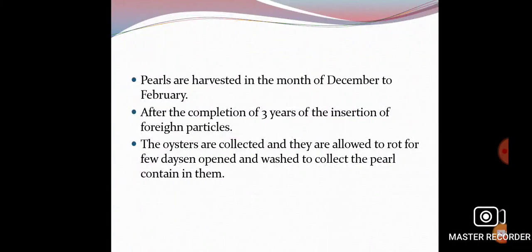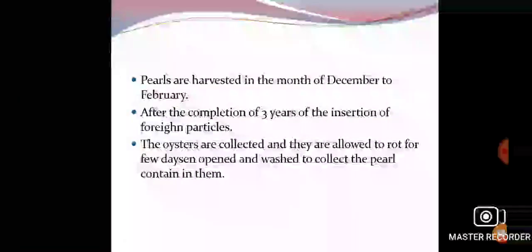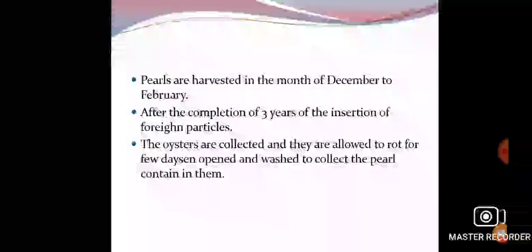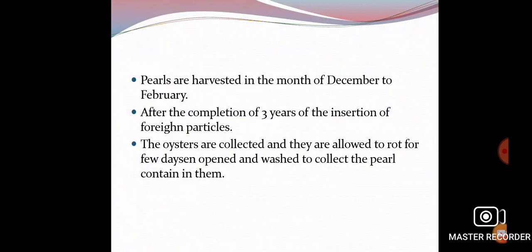The oyster requires three years for the complete formation of the natural pearl. The oysters are collected and they are allowed to rot for a few days, and then they are opened, washed, and the pearl contained in them is collected. When the three years of pearl formation are completed, such oysters are collected and killed.